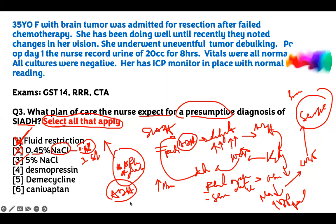What is the underlying pathophysiology? ADH is the problem. So either you get rid of ADH or you block it — don't give them any more ADH. Desmopressin is ADH, so that's negative. Demeclocycline — yes, it blocks ADH, so that's correct. Conivaptan is another drug that blocks ADH — drugs ending in '-vaptan' block ADH. So remember: conivaptan, demeclocycline, 3–5% normal saline, and fluid restriction are the treatments for SIADH.